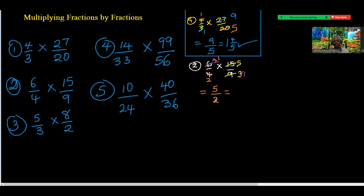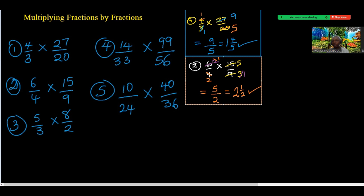This is an improper fraction, so how many 2s are in 5 — that's 2 remainder 1 over 2. Don't write yet, let's look at everything together and once we're through you can put them down. Number three says 5 over 3 times 8 over 2. 8 over 2 is just 4, yes or no? Yes.